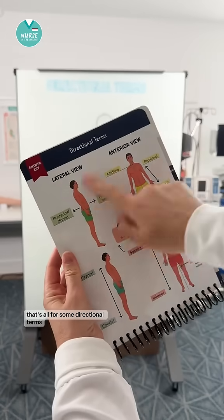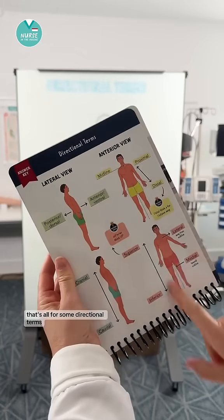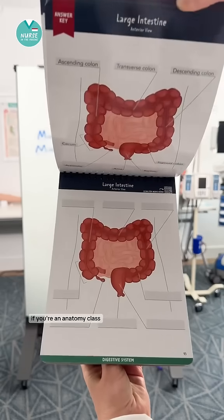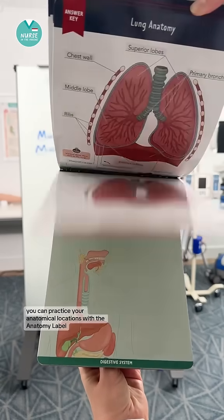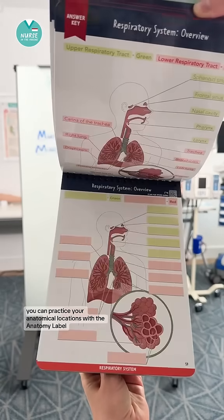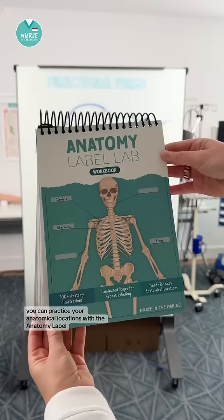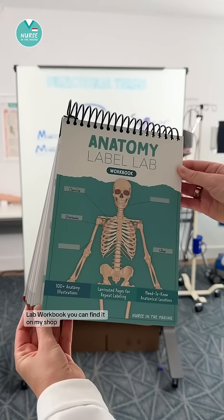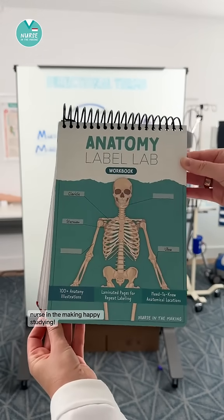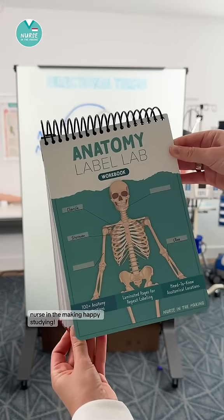That's all for some directional terms. If you're in anatomy class, you can practice your anatomical locations with the anatomy label lab workbook. You can find it on my shop, Nurse in the Making. Happy studying.